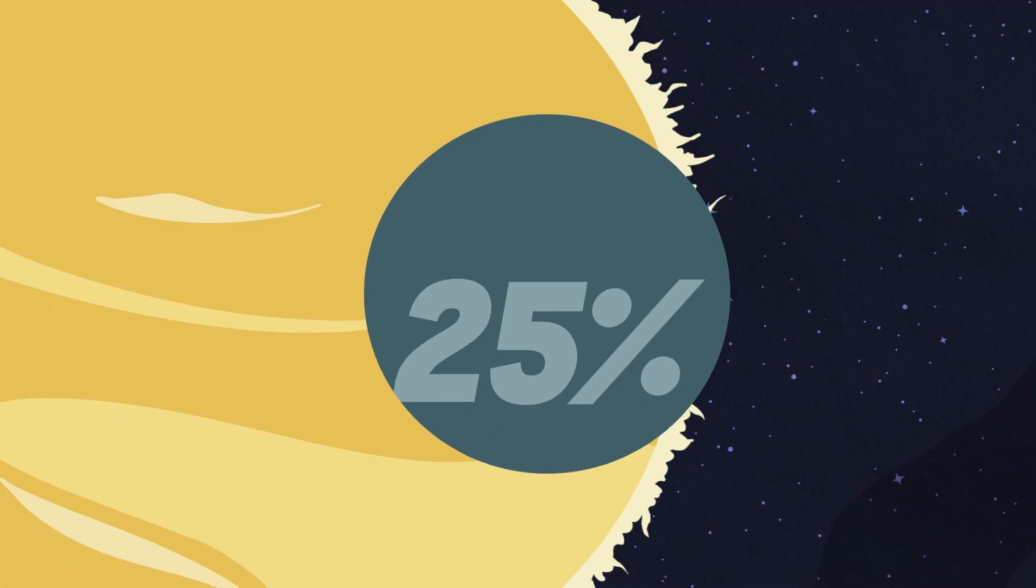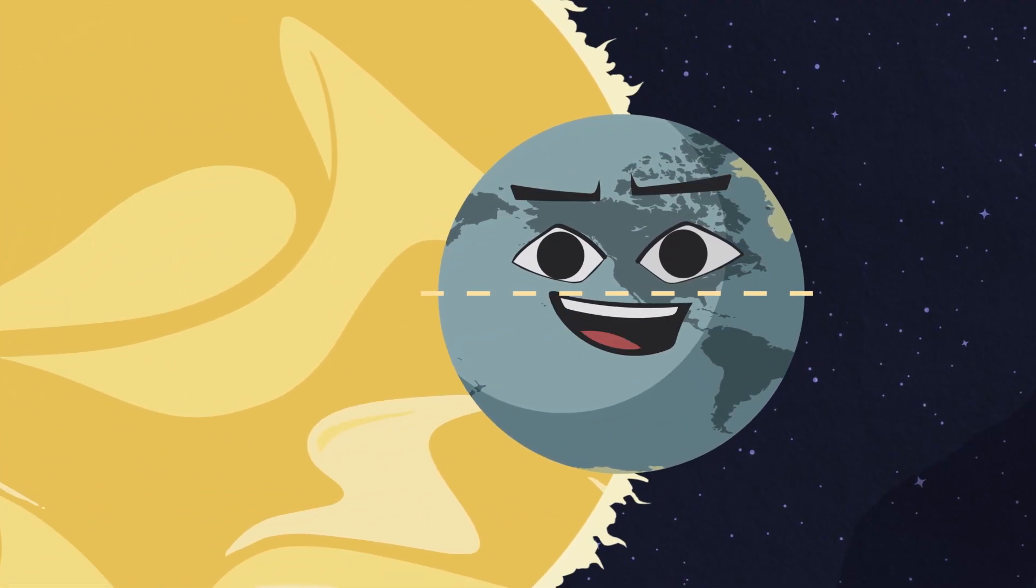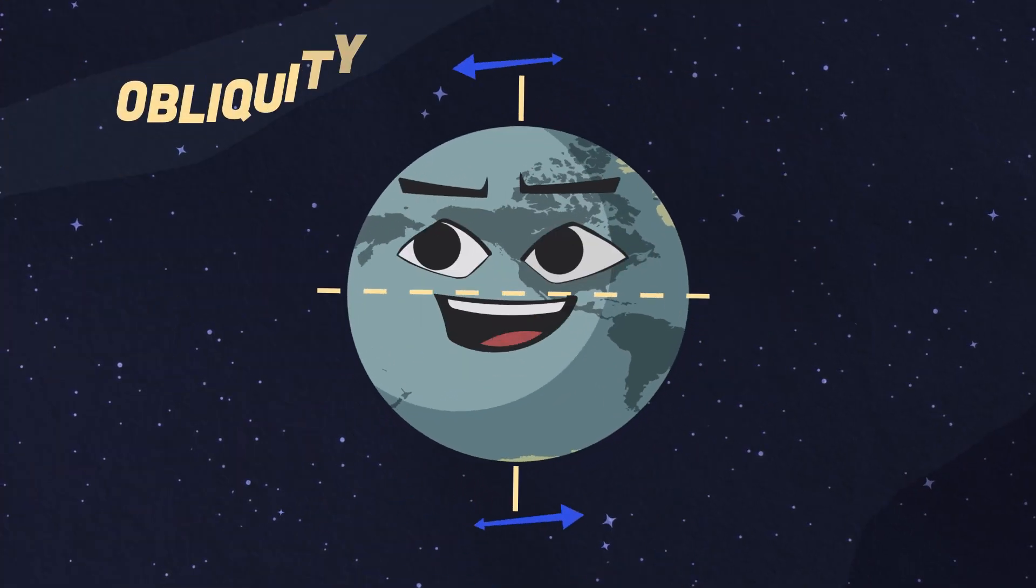This cycle creates a 25% difference in solar radiation between the southern and northern hemispheres in all nations.